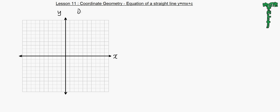So to begin with, let's look at the derivation. So say we had two points, point A where it had coordinates (0, c) and point B which had coordinates (x, y). Now let's join the two points to make a line.